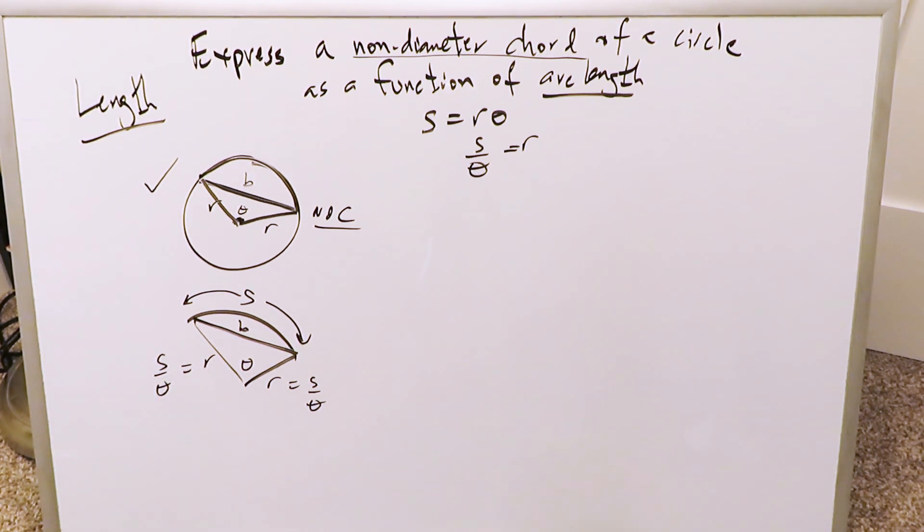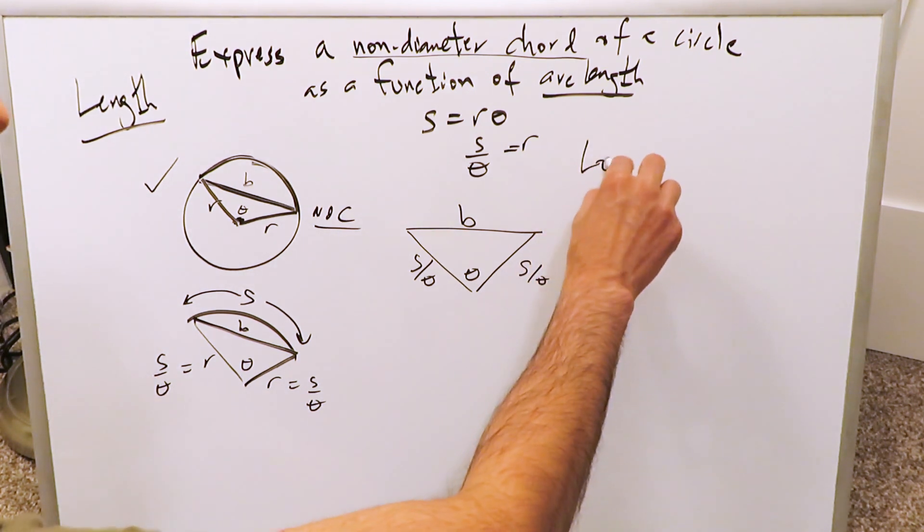You're essentially now looking at what is a triangle, and it looks something like this. This is a segment we want to find the length of the non-diameter chord. We have S over theta, we have S over theta, we have a certain angle theta. You know you're looking at a triangle which has one angle and three sides, and why don't you think about here the law of cosine?